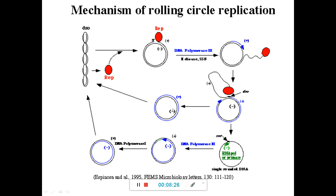The double-stranded DNA formed here has a nick which is joined by ligase, forming the complete double-stranded plasmid. The single-stranded DNA remains bound with SSB proteins and the Rep A protein. In the next step, Rep A moves and at a particular region the DNA forms a loop toward the inside.